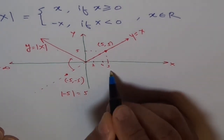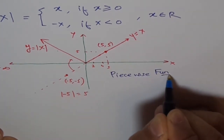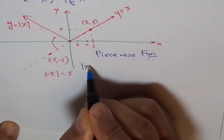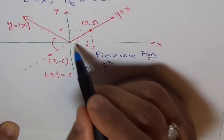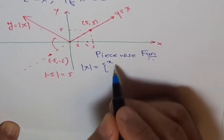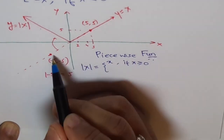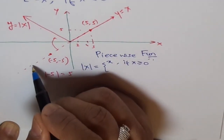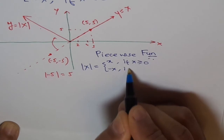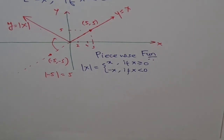The absolute function can be seen as a piecewise function. Writing it in the standard fashion: absolute X equals positive X — same as Y equals to X — if X is greater than or equal to 0. But it becomes the negative of that value, negative of X, if X is less than 0. That is how we define our piecewise function for absolute X.